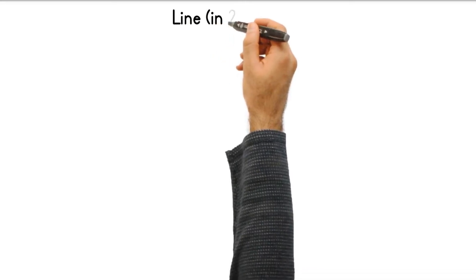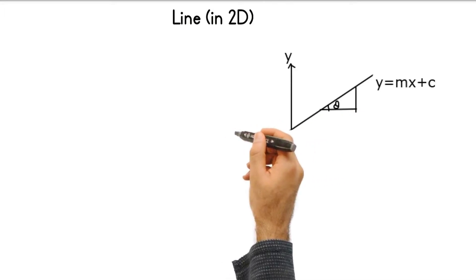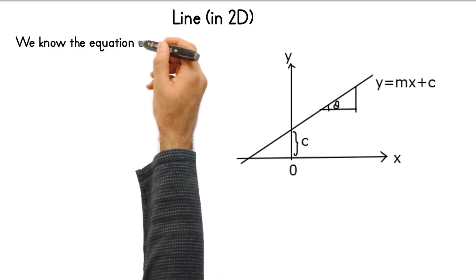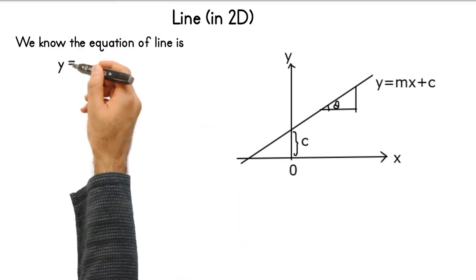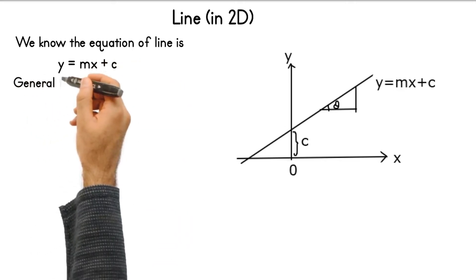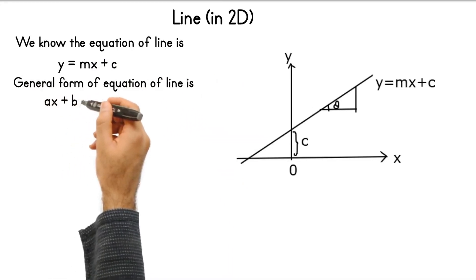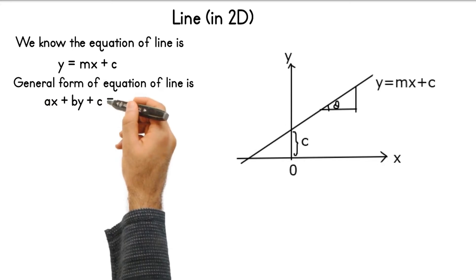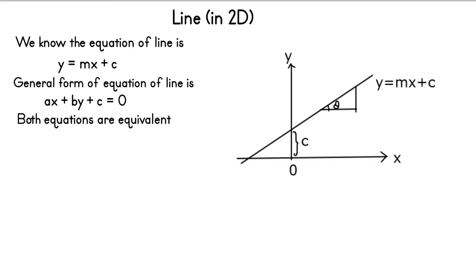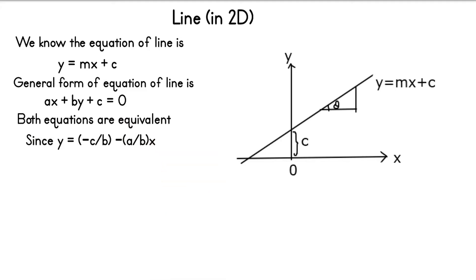We have learned about point or vector. Let's move ahead and learn about line. Let's look at what is a line in 2D. Suppose we have x1 and x2 axes. If you recall from school, we used to write a line as y = mx + c, where m is the slope of the line and c is the intercept on the y-axis. There is another equation of a line called ax + by + c = 0, which is the general form of a line, and both are equivalent.